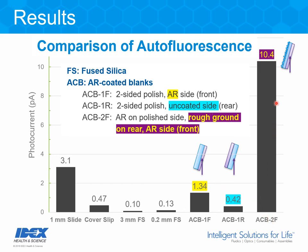Moving on to anti-reflection coated blank ACB2, the presence of a rough ground rear surface — even though we're exciting just the AR coating — creates a huge boost in signal. That rough ground surface scatters the laser excitation light and the fluorescence it produces. This underscores the importance of managing scattering in the measurement and the importance of using a good emitter filter to block the excitation light.